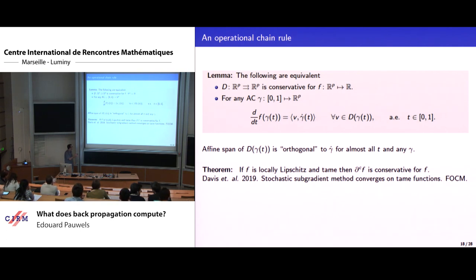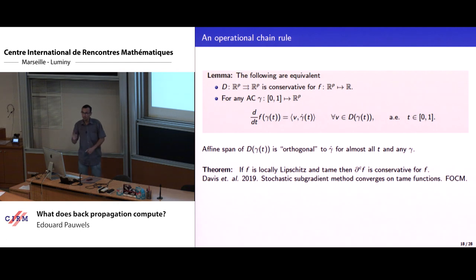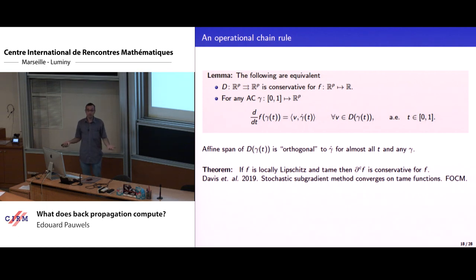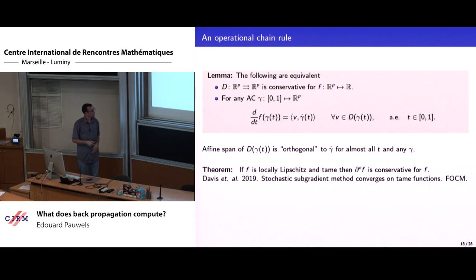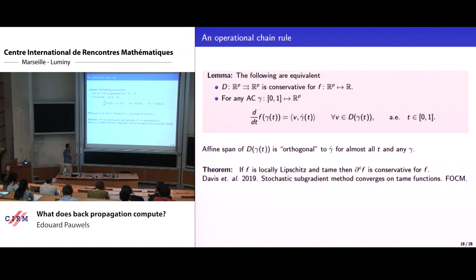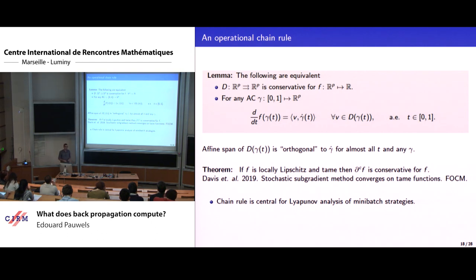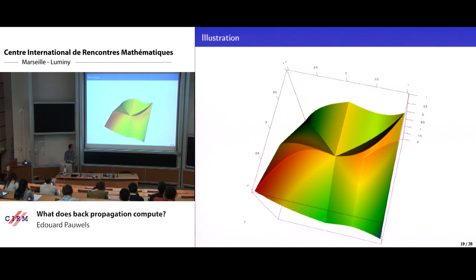Using this equivalent characterization we can invoke the result of Davis and colleagues from their FOCM paper, which shows that locally Lipschitz tame functions satisfy conservativity — in particular the Clarke subdifferential must be conservative for locally Lipschitz tame functions. Tame is a new word here: tame functions constitute a class of well-behaved functions that are nice from a geometric and topological point of view. In many situations there are easy sufficient conditions to check that a function is tame. This chain rule will be central in the Lyapunov analysis of mini-batch strategies for optimization.